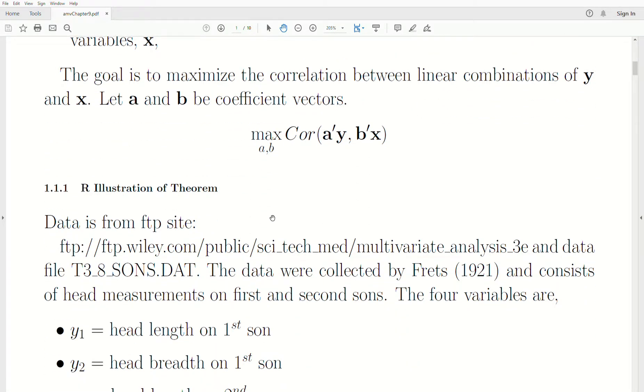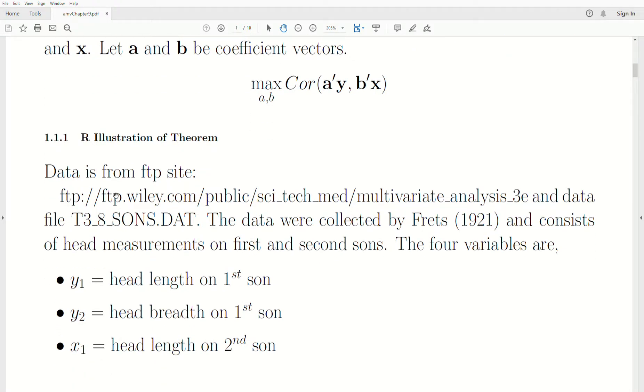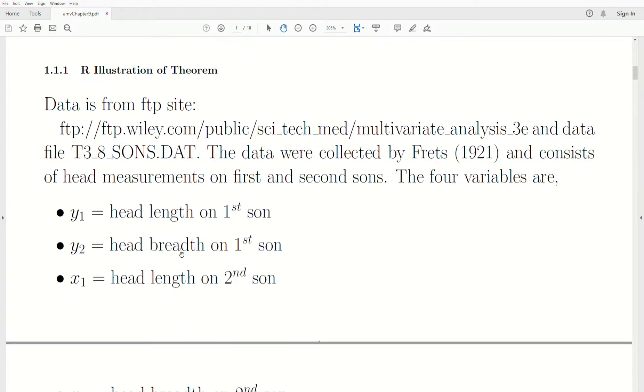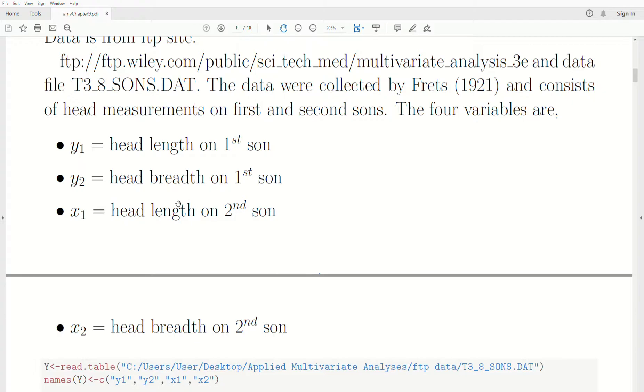Lots of words there. But here's a brief illustration. Now the data is from an FTP site given here. The data we're using is T3-8 suns. And the data were collected by FRETS in 1921 and consists of head measurements on first and second suns. The four variables are head length and head breadth on the first sun, and head length and head breadth on the second sun.